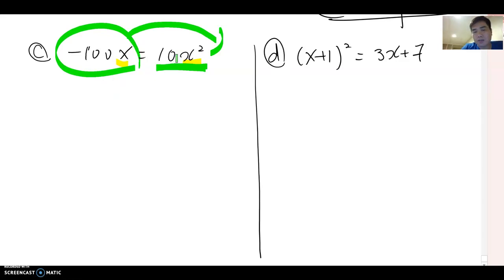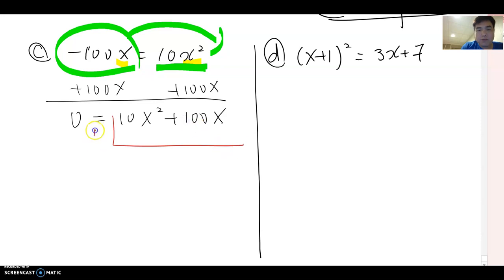Which means you combine the opposite of this form, which is plus 100x and plus 100x. Then this becomes zero equal to 10x squared plus 100x. Now, it looks like a binomial factoring form, but not yet though. Because if you can find any common factor, then you need to factor by that first. 10x squared and 100x. What is the common factor? Yes, you can factor by 10 first. Then it becomes x squared plus 10x.